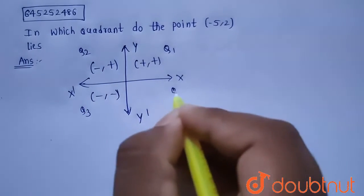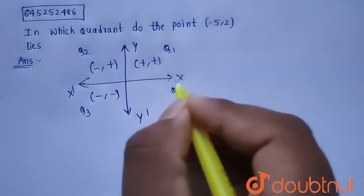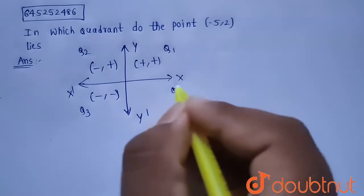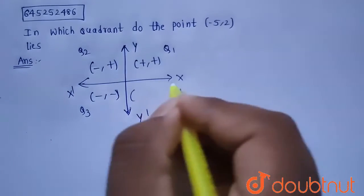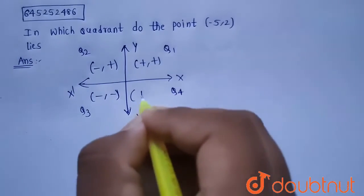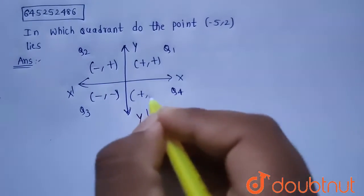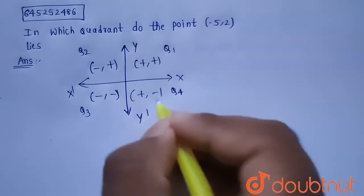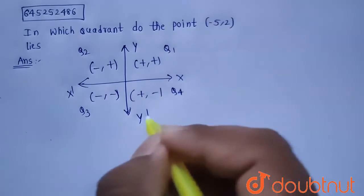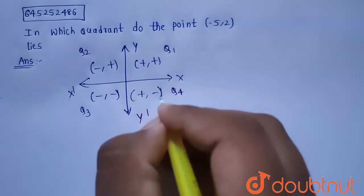And this is Quadrant 4. In this case, the x-axis is positive and the y-axis is negative. So the x-coordinate will be positive and the y-coordinate will be negative.